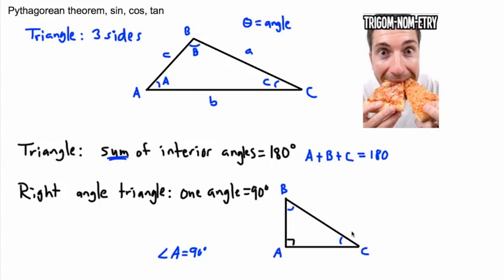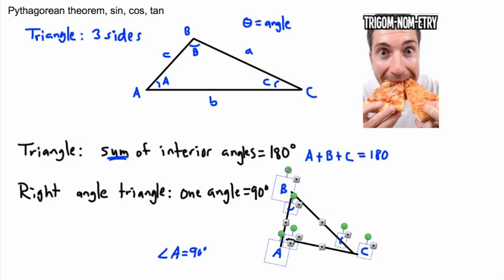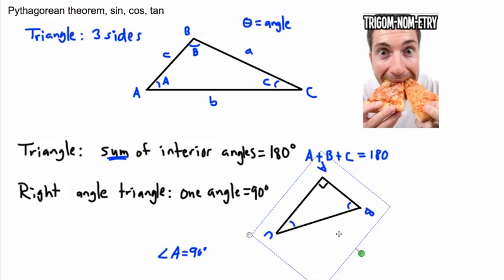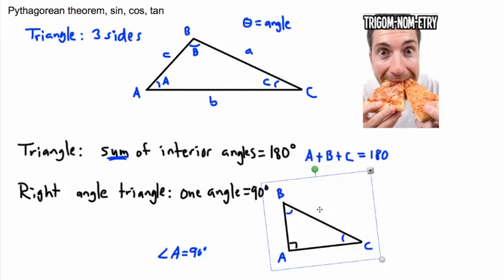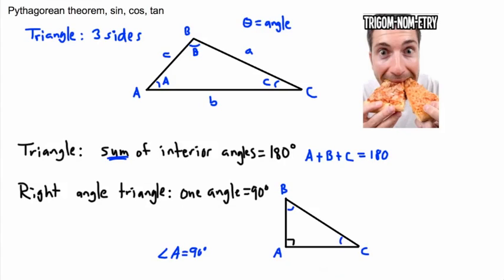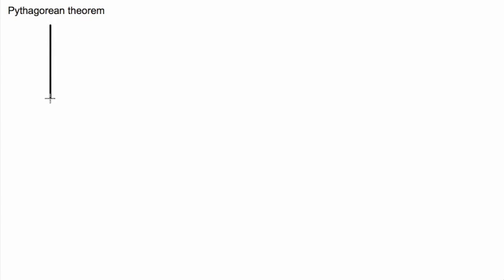One thing to note: people are used to seeing right angle triangles drawn a certain way, but you can take the whole thing and rotate it. It could be oriented any way you like — it's still a right angle triangle as long as one angle is 90 degrees. Now, we can use a theorem by Pythagoras — the Pythagorean theorem — but it only works for right angle triangles.